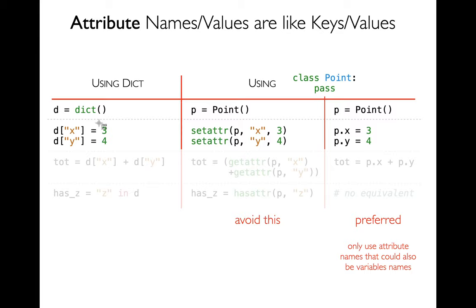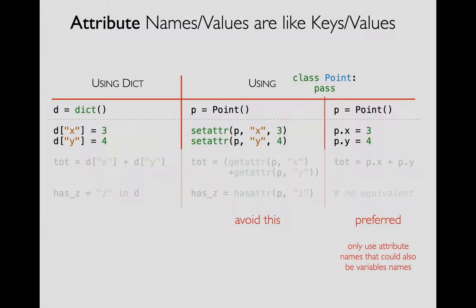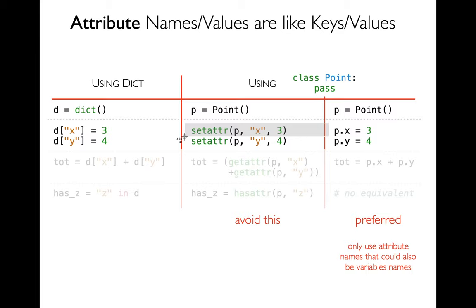If I want to put values in a dictionary, I say `d['x'] = 3` and so forth. There's also a built-in function called `setattr`, where I pass it three things: the object I want to modify, the attribute name, and the attribute value. These are very analogous. The other way I can set attributes is `p.x = 3` — saying `p dot attribute name equals three` — and that's generally going to be preferred. I think this more tightly brings together the idea that objects created from classes are really kind of fancy dictionaries, and it's easy to forget that when we see the dot syntax. It's really the same thing internally.